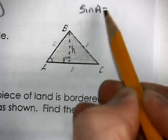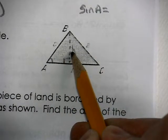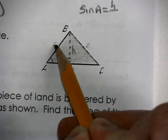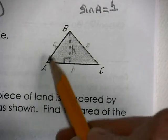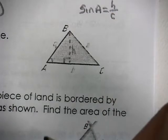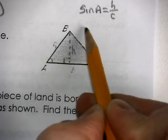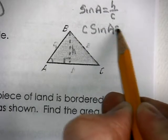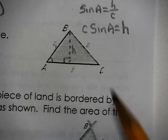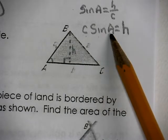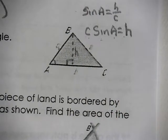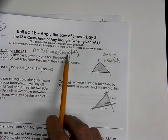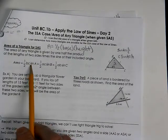Sine of A is going to be this opposite side, which is H — the height — over this adjacent side, or the other side. In this case, it happens to be the letter C. So we would multiply the C over. We have C sine of A, and that is the height of the triangle. C sine of A is the height of the triangle.